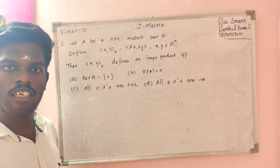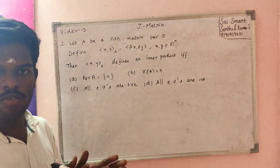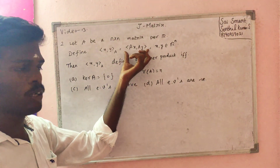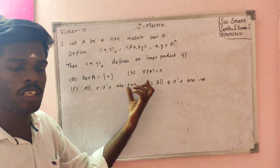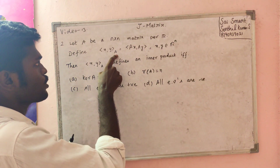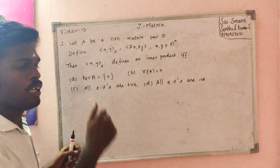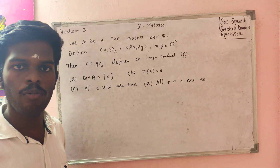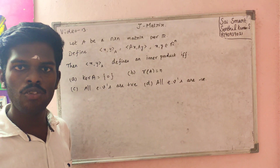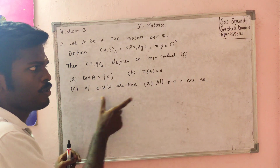If one condition is not satisfied, you cannot satisfy the definition. The definition involves checking whether the form satisfies symmetry and skew-symmetry properties. So we go for option 2.